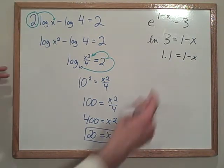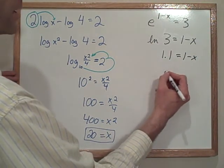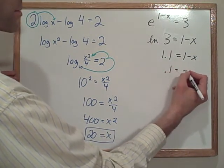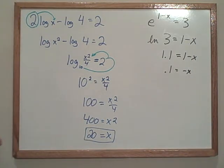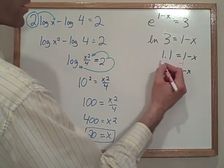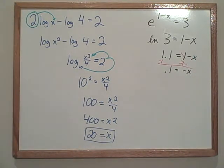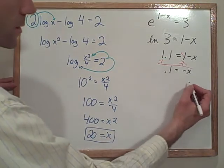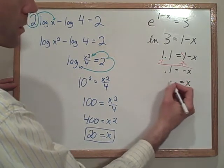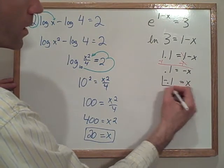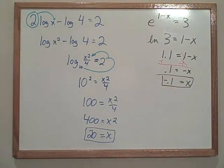We'll continue to solve. Subtract one from each side. Point one equals negative x. If you don't know what just happened, we just simply subtracted one here and subtracted one here, and those canceled. That's what happened. And now we're going to divide by negative 1. So x is going to equal negative 0.1. And that is our final answer for that one.